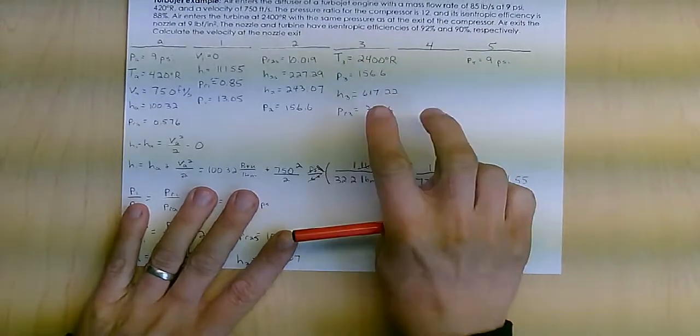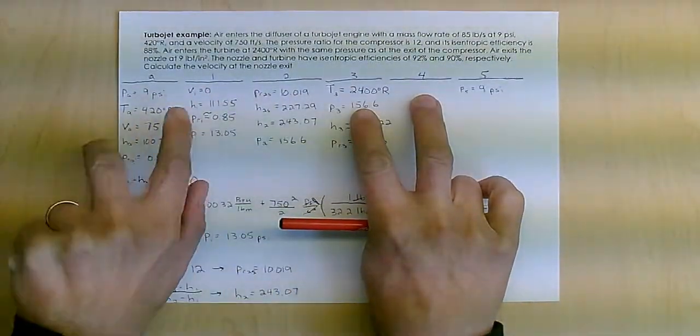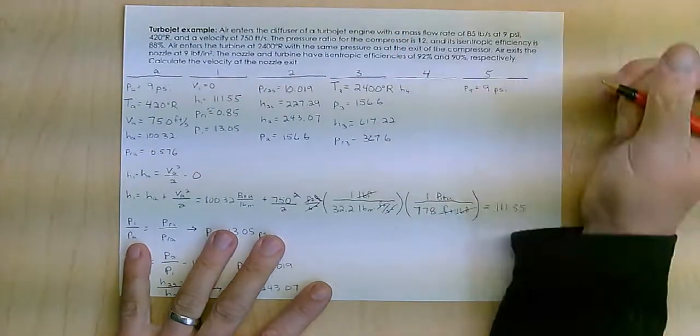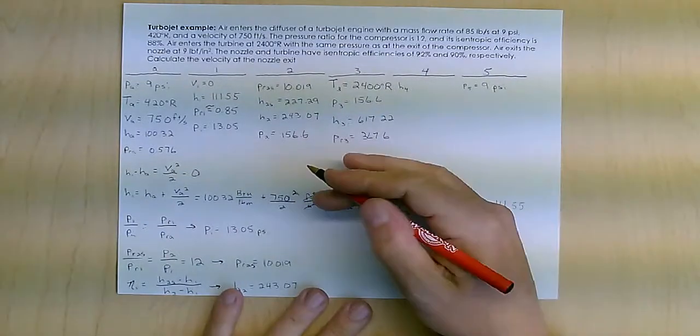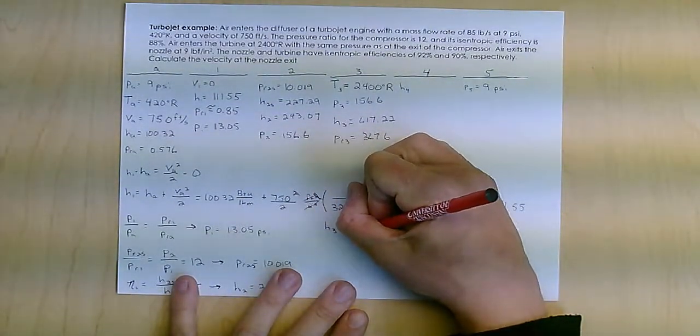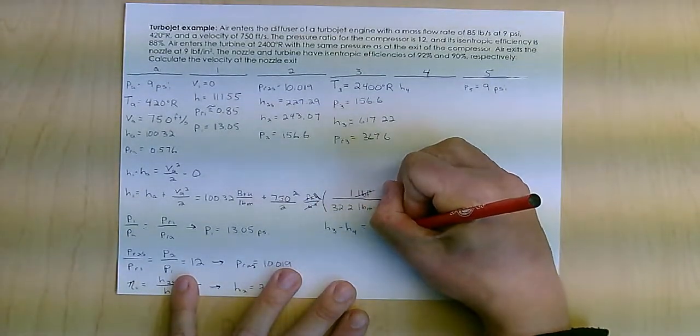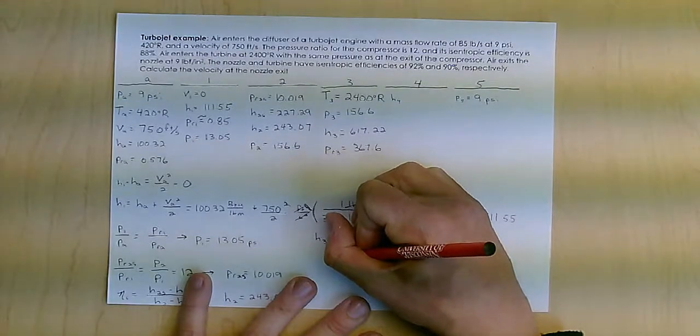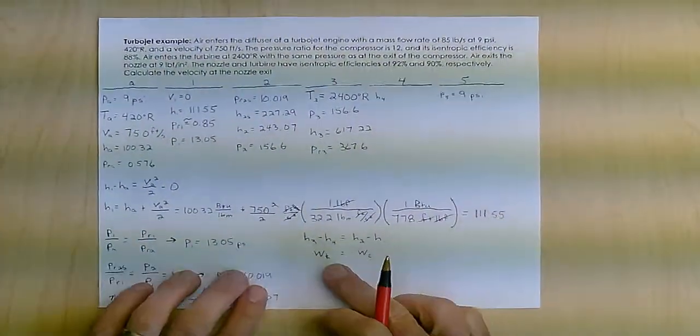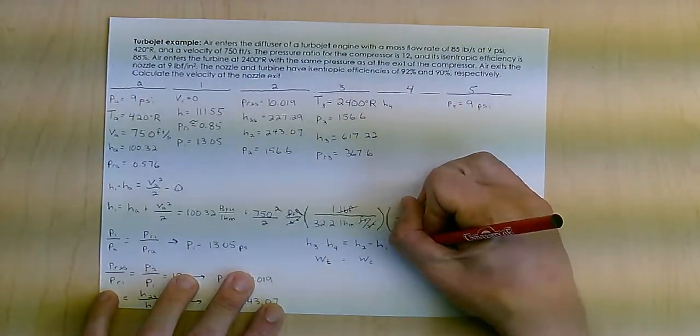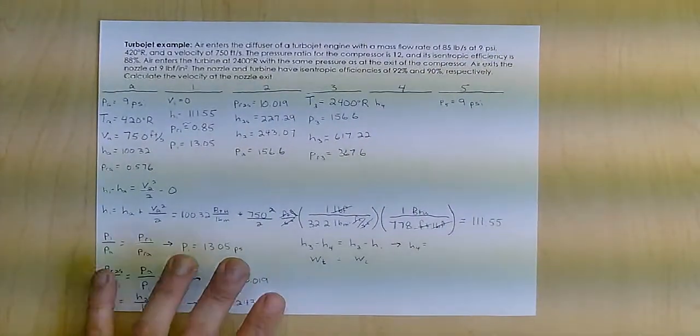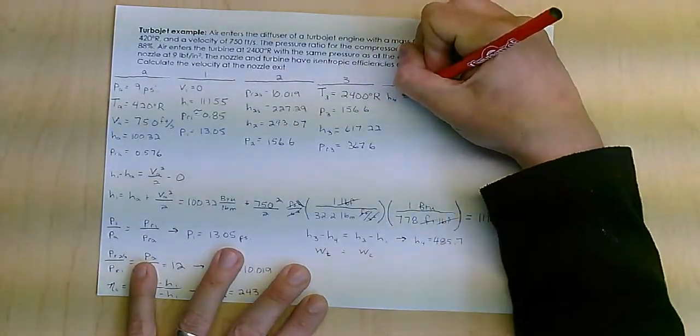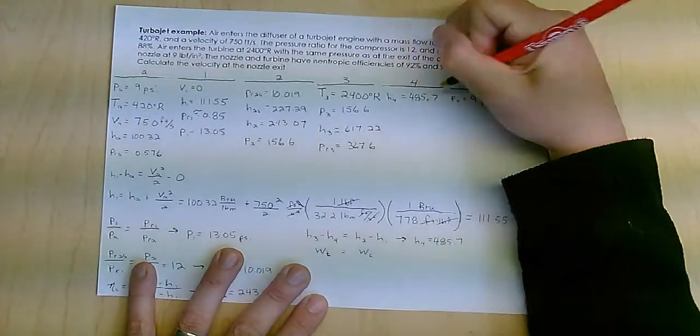Now, here's the thing about the turbine. Remember, the turbine runs the compressor. So I can actually directly find H4 just from the equation that basically H3 minus H4 equals H2 minus H1. And that's because, again, this is essentially the compressor, and that's the turbine, runs the compressor. So, again, I know all of these values, 1, 2, and 3. I can therefore easily find H4, which I find to be 485.7. That sets state 4.